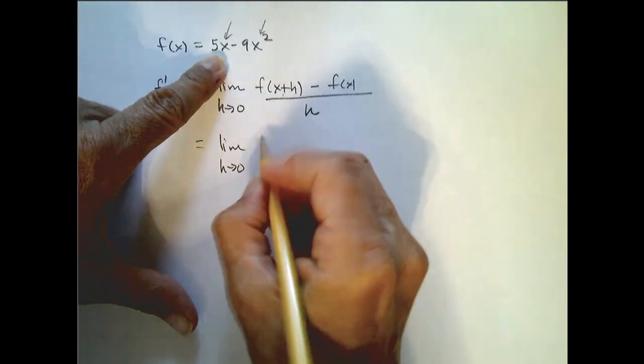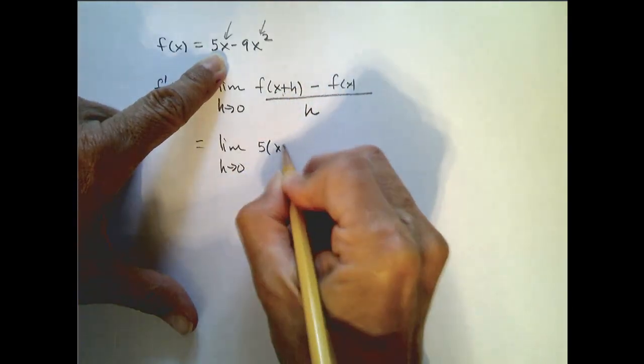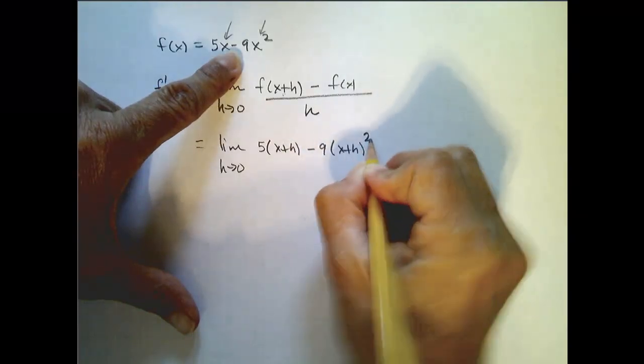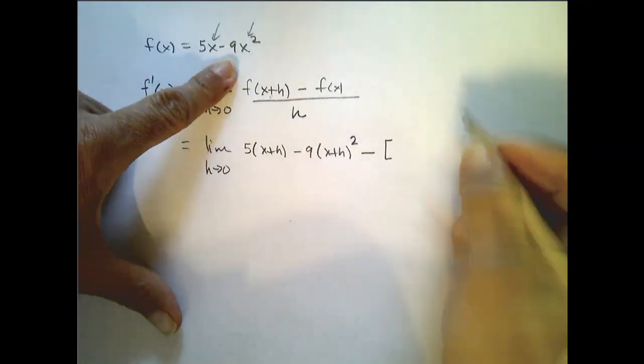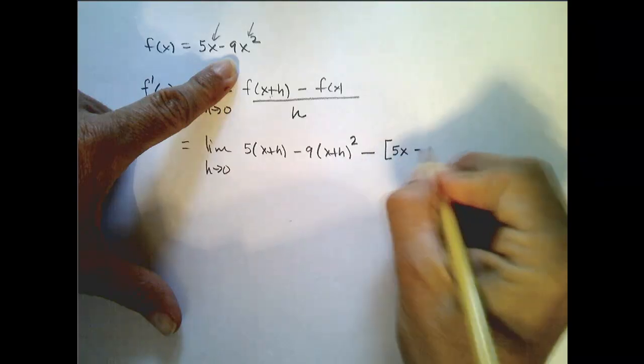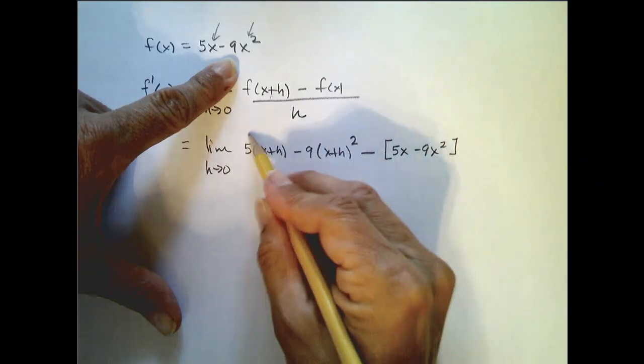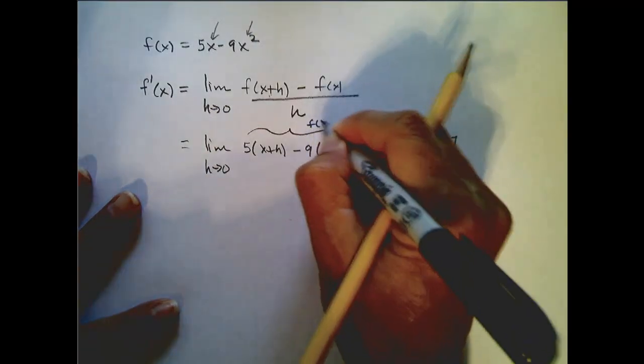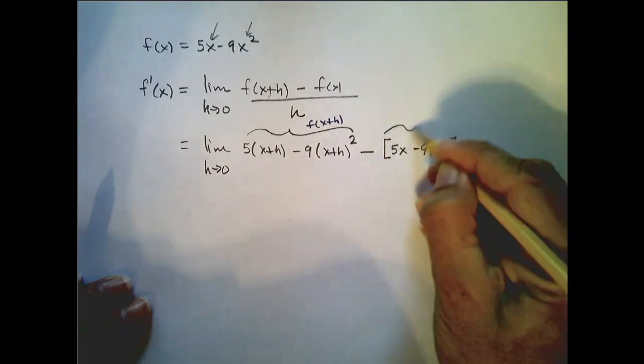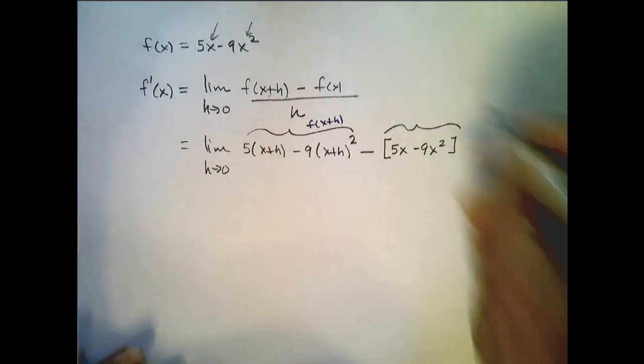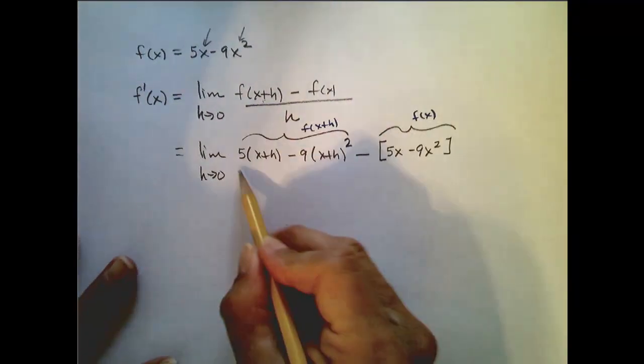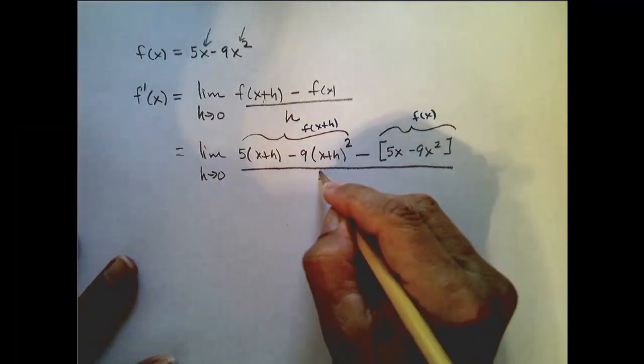So this is equal to the limit as h goes to 0. So here's my function, except I'm going to replace x plus h. So 5 times x plus h minus 9 times x plus h squared minus, now be careful, put this in parentheses because you're subtracting this entire function, 5x minus 9x squared. So here, that is my f of x plus h, and here, that is my f of x. And we're going to take all this and divide it by h.